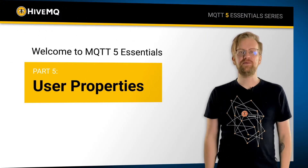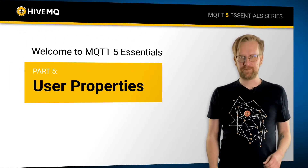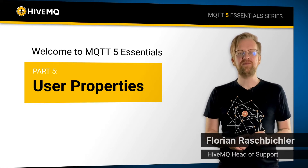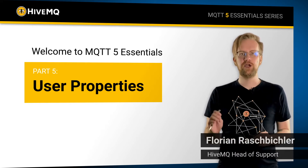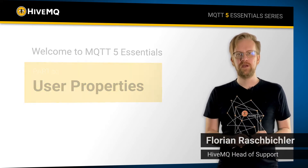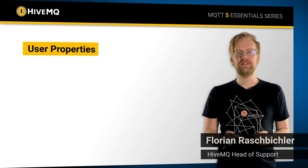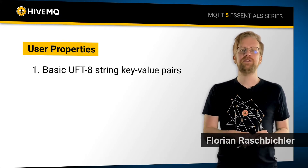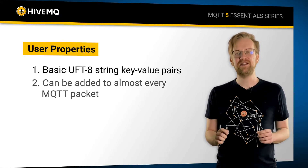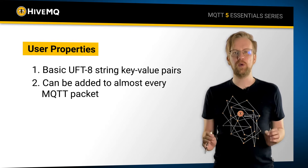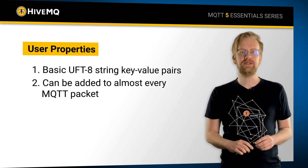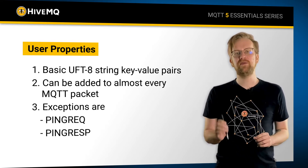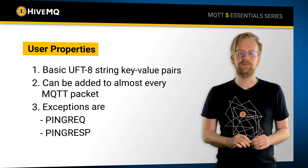Welcome to today's edition of MQTT Monday. I'm excited to talk about one of my favorite MQTT5 features: user properties. These UTF-8 string key-value pairs can be added as a header to almost all MQTT packets, with ping response and ping request being the only two packets that are exempt.